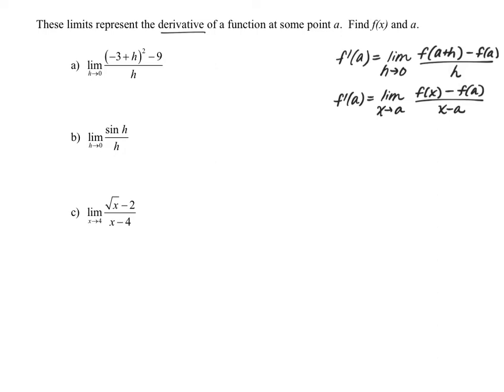We need to look at example a and determine which one of these limit definitions is being used. There's a pretty obvious giveaway: it's the limit as h approaches zero, so we know we've used the first limit definition. We're being asked to find the function and the value of a — as if somebody has already put together the limit for you and is asking what was the original function and what was the value of a.